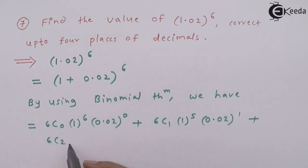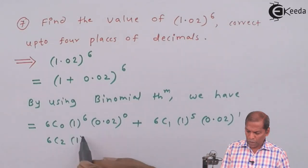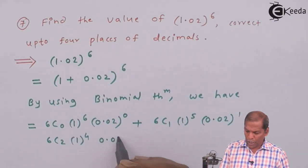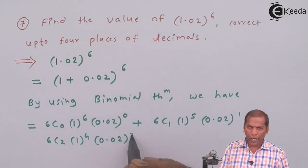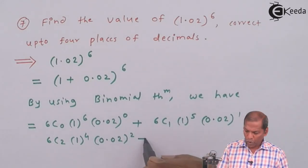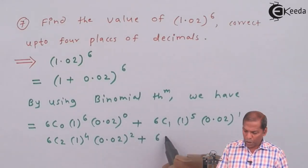(6C2)(1)^4(0.02)^2 plus (6C3)(1)^3(0.02)^3 and plus going on.